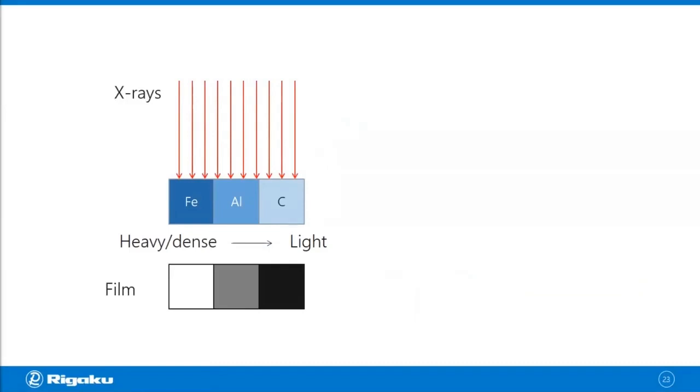Carbon, on the other hand, is very light, so it does not absorb X-rays that much, so the film as a result gets burned quite a bit. Aluminum, density-wise, it's somewhere in between, so the gray level you see on the film is also somewhere in between. So you can see that the X-ray absorption rate is density dependent.